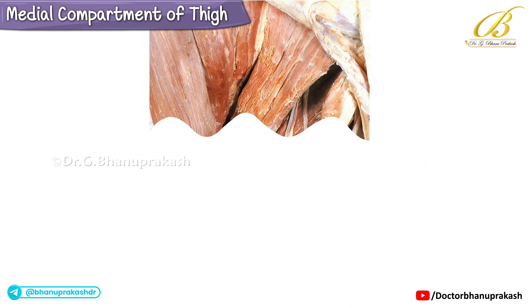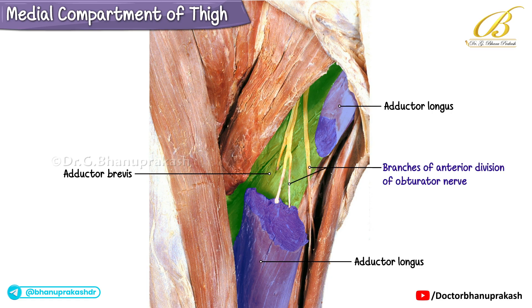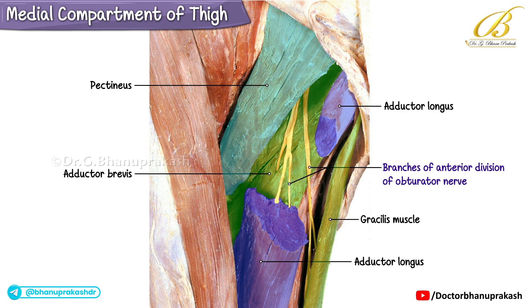Upon further dissection of the adductor longus, we can now appreciate the adductor brevis lying beneath it. Branches of the anterior division of the obturator nerve are clearly seen emerging between the pectineus and adductor brevis. The muscular branches of the anterior division of the obturator nerve can also be observed piercing the adductor longus, adductor brevis, and gracilis muscles.